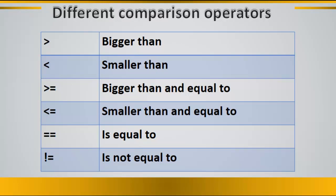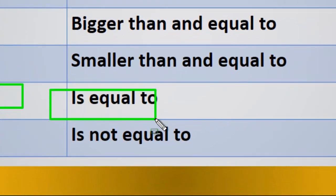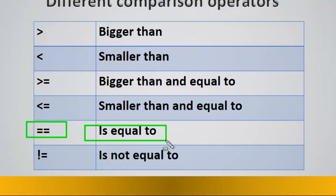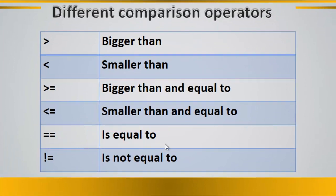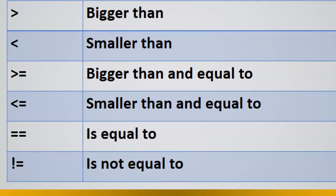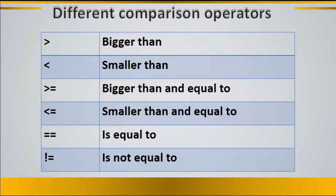Oftentimes you need to compare between two values. You can use comparison operators to make comparisons. It is very important to notice that two equal signs (==) are used to make a comparison between two values or variables — that is the comparison operator. However, one equal sign (=) is an assignment operator. If you want to state that the content of one variable is not equal to another, you write the first variable, then an exclamation mark followed by an equal sign (!=), then the second variable.